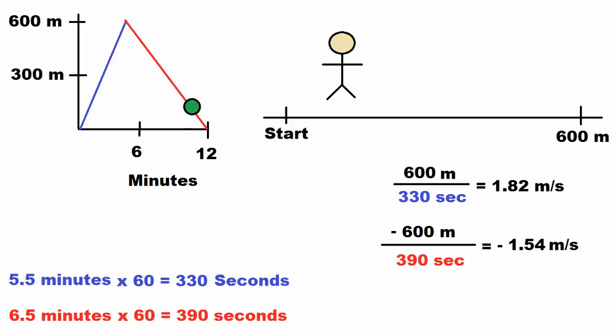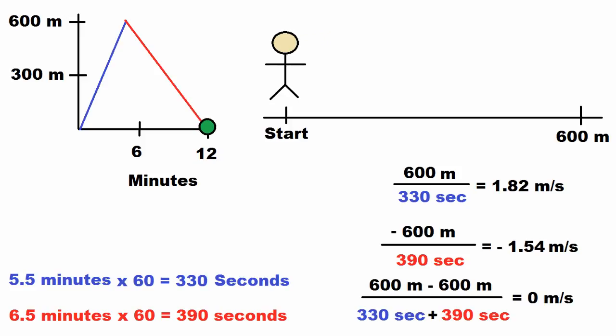and this equals 1.54 meters per second. So now to get the total average velocity, we take the 600 meters minus the 600 meters over 330 seconds plus 390 seconds, and this equals 0 meters per second.